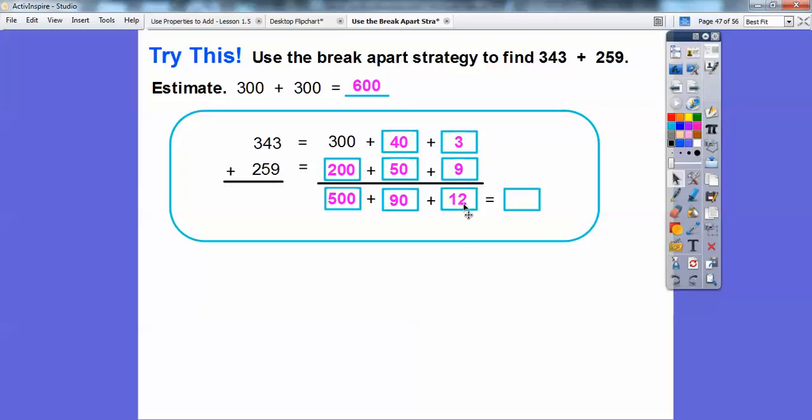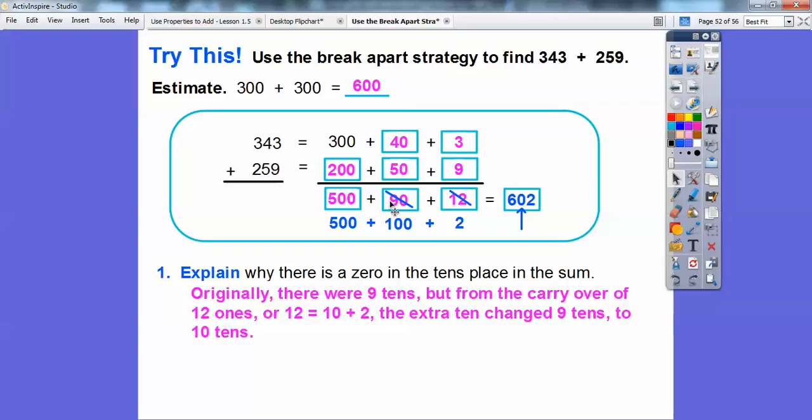We'll carry this over. This 12 ones is the same as 1 ten. So we'll add 1 ten to the 9 tens right there, 1 ten and 2 ones. So 12 is the same as 2 plus one more 10 that we'll put in here with the 9 tens. So now we're just going to add 500 plus 100 plus 2, and that's going to give us 602. Explain why there's a 0 in the tens place. Originally there were 9 tens, but from the carry over of these 12 ones, 12 ones is the same as 10 plus 2. The extra 10 changed this 9 tens to 10 tens, which is 100. So that 10 tens gave us that 0 right there in the tens spot.